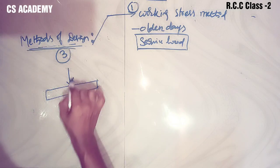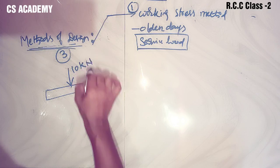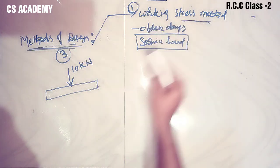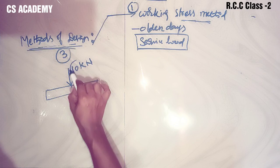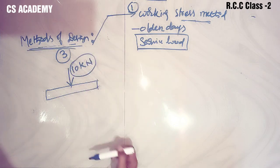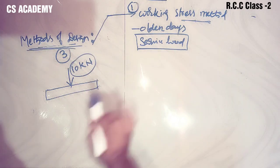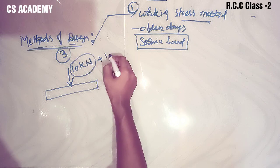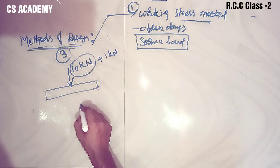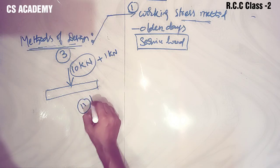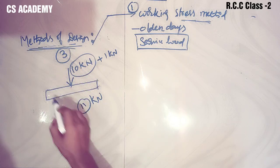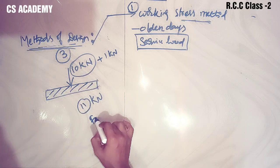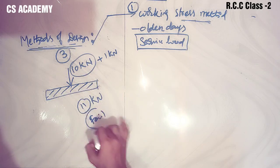For example, using the working stress method: if a beam needs to carry 10 kN load, we design it based upon exactly 10 kN. In case 11 kN load acts - just one extra kN - this beam will fail. So this method designs only for the exact service load.